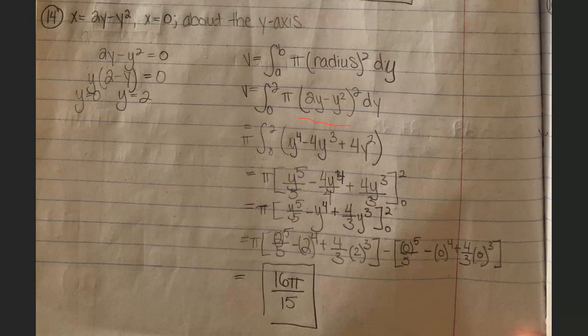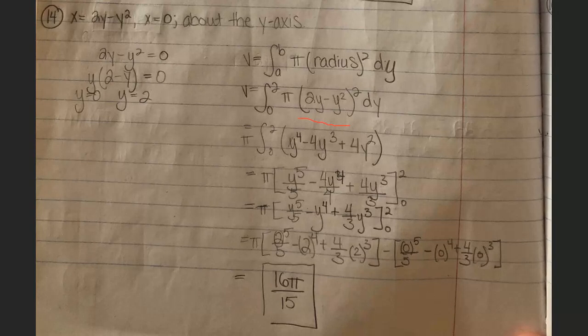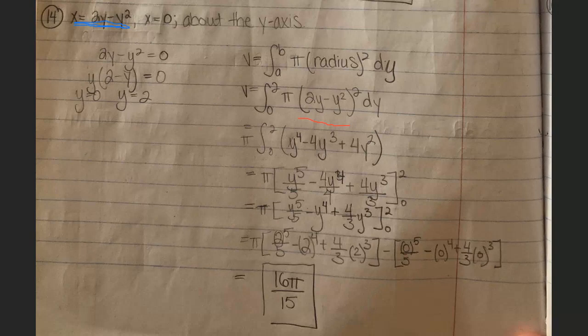The teacher explains that it's easier to understand the problem when you have a picture. Usually, the radius corresponds to the equation or function given. The region is enclosed by two equations, and that's why it's better to graph it to see which parts apply.